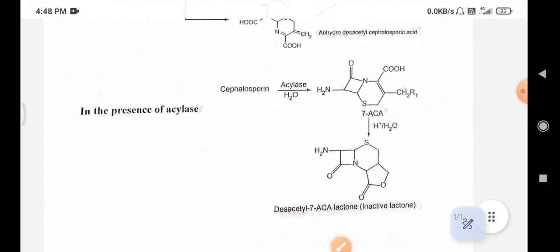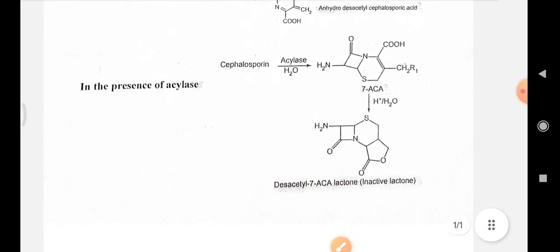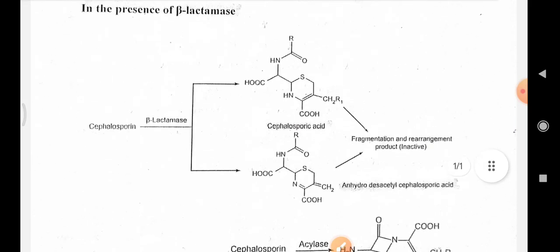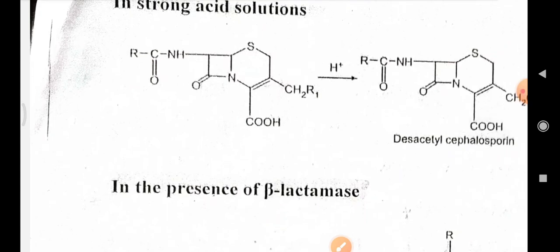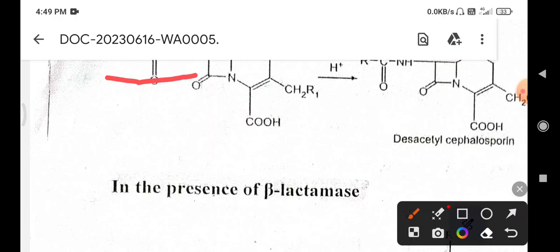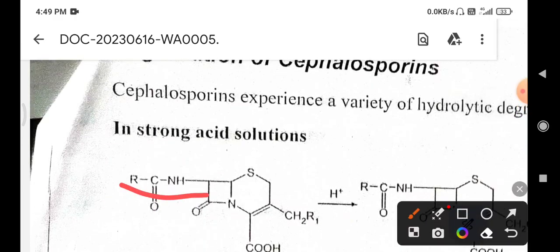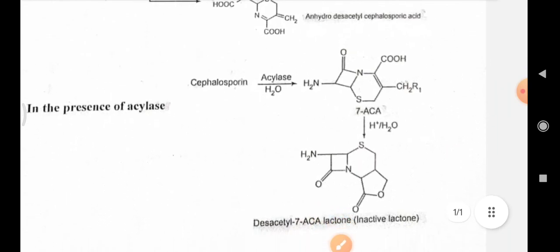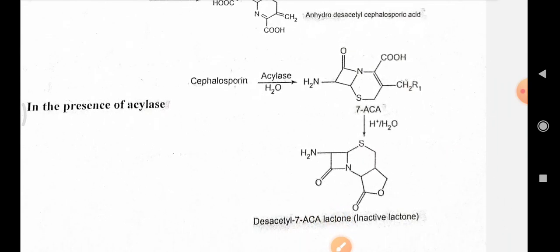In the third case, there is the presence of the acylase enzyme. The structure of cephalosporin contains an acyl amino group at the seventh position. The attack of the acylase enzyme on the acyl amino side chain leads to hydrolysis and cleavage of the acyl amino side chain.